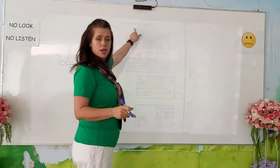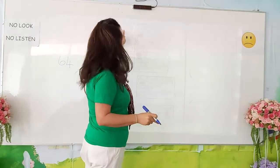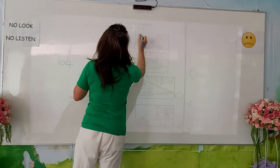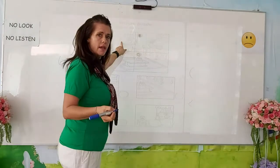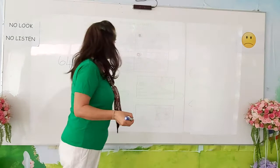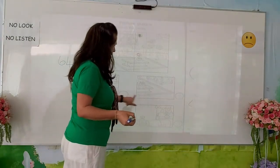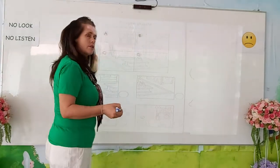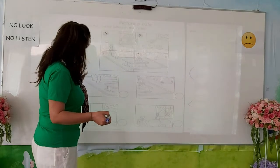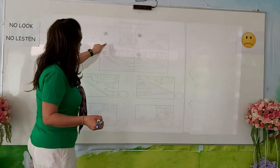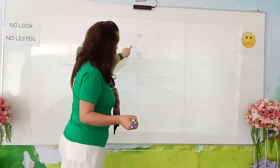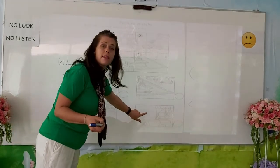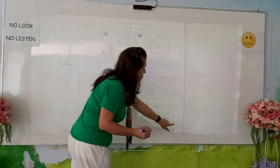Picture puzzle: write the correct letters in the circles. We have pictures a, b, c, and d, and we need to write the correct letters in the circles that match the top puzzle. Let's start with number one. Picture a shows flowers with a couch and a window. Let's see which picture has flowers with a window — it's this one. Write the letter A in the circle.